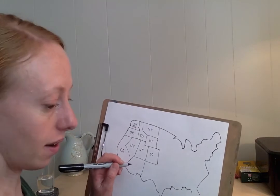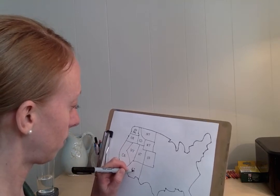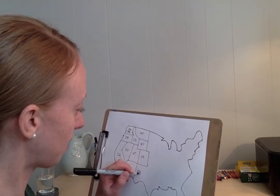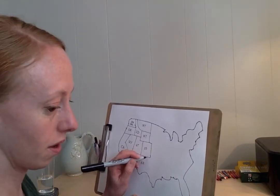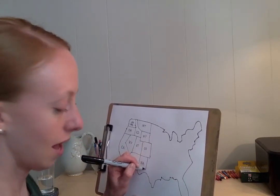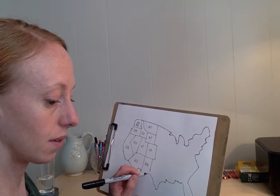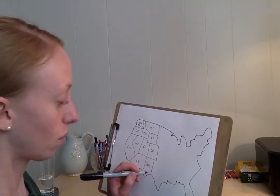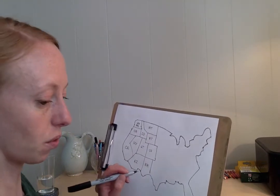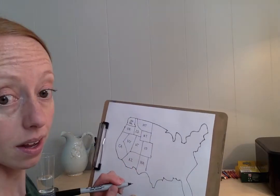Down here we have Arizona and New Mexico. New Mexico is going to be shorter than Colorado, so connect it to the edge of Colorado, come down. Then this line that just came down — here's our Texas. I think I've drawn this a little bit wrong, but that's okay — we're going to come back to that in a second. It's close.